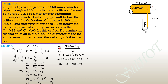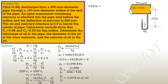Evaluating the pressure head at point 1 in terms of oil: P₁/γ_oil = 31.098 / (0.86 × 9.81) = 3.5676 meters of oil. Substituting into the energy equation: 3.5676 = 38.0625 × V₁²/19.62, solving gives the theoretical velocity V₁ = 1.3561 m/s.